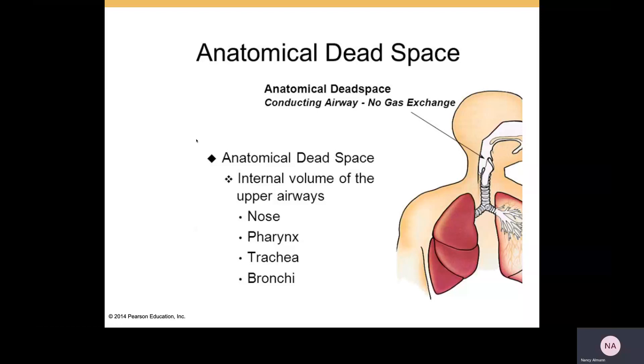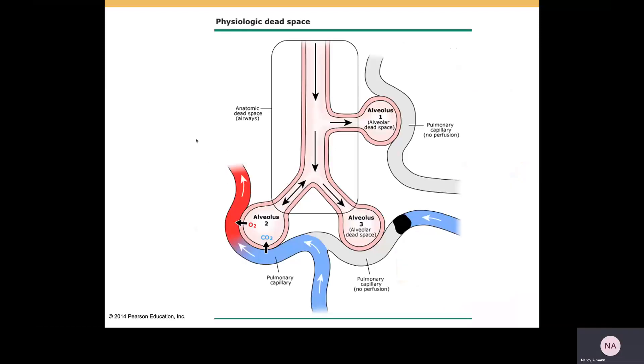This just gives you a quick picture of the anatomical dead space. Again, no gas exchange. It's just air that is in the passageways. And it shows you what areas are involved: the nose, the pharynx, the trachea, and the bronchi. This gives you another image of the dead space. This is physiological dead space. So, again, anatomic dead space is going to be the passageways. And if you have an alveolus that is not functioning properly, that will be the alveolar dead space.